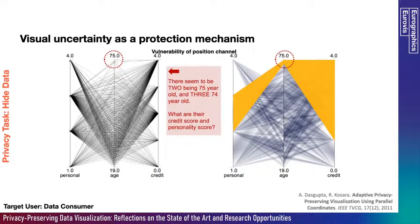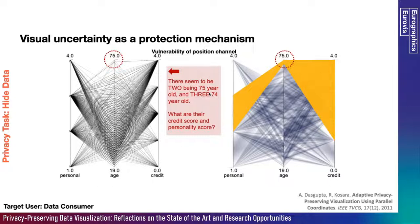Here is another example of hiding data. We show the vulnerability of the position channel. On the left-hand side, in this parallel coordinate, some individuals can be uniquely identified from this axis. But if we reduce the granularity using techniques like binning or aggregation, we can see from the right-hand side that this cluster cannot uniquely identify those individuals. This example uses uncertainty in the screen space as a protection mechanism.